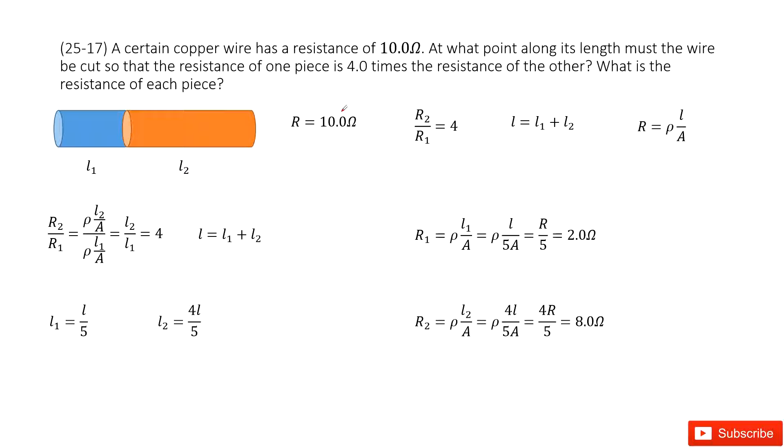We have a copper wire that looks like this one, and the resistance is 10 ohms, so we write it down. At one point we cut it. The length for this first part is L1, the length for this part is L2.